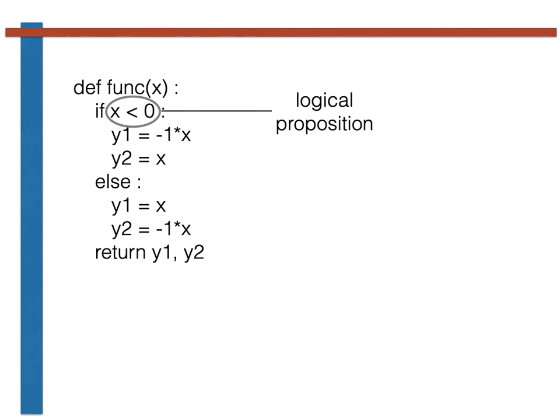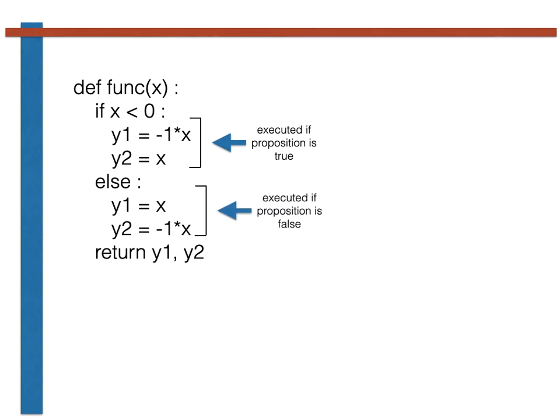If the truth value of this proposition is 1, then we execute the code shown here. If the truth value of this proposition is 0, then we execute the code shown here.